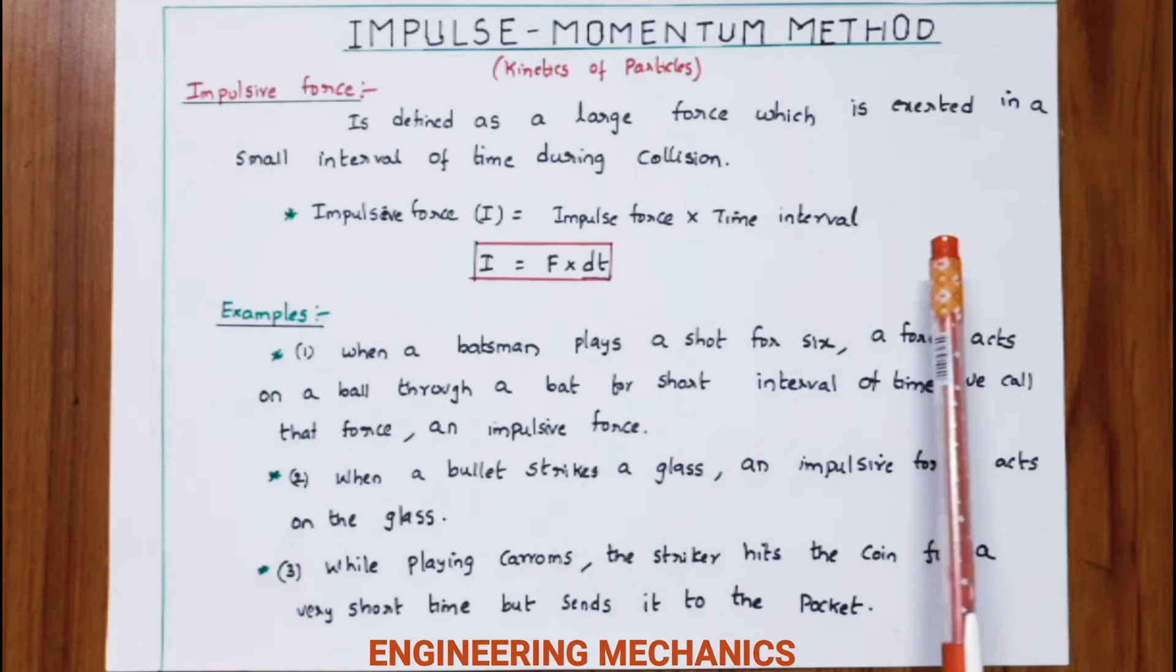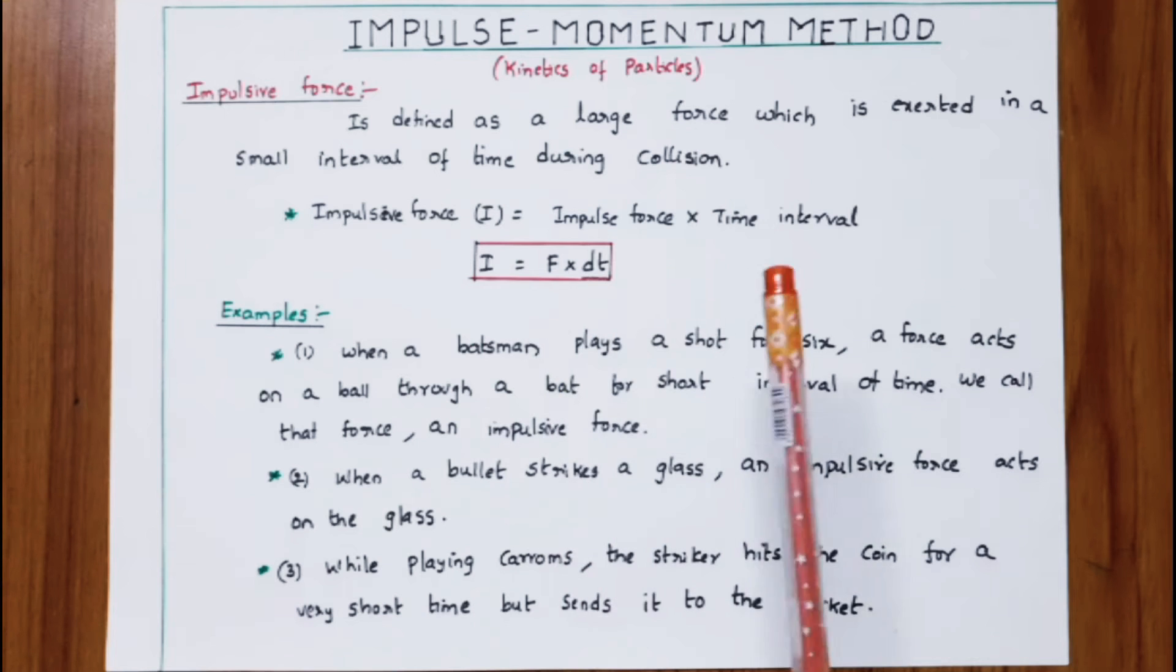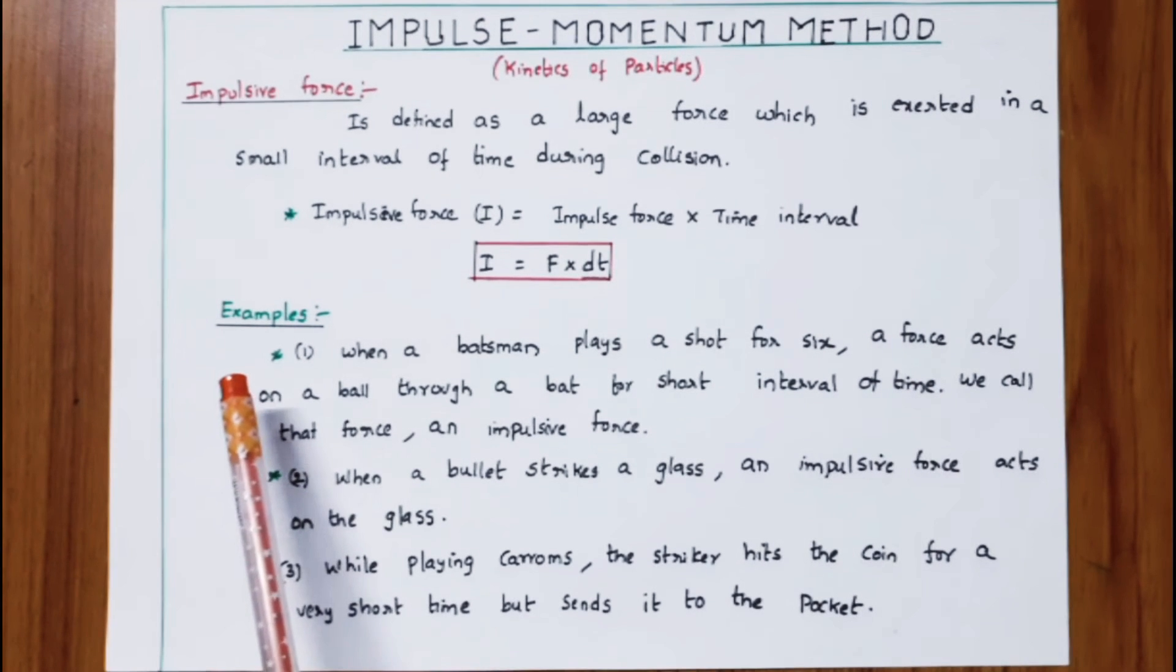Impulsive force I equals impulse force into time interval, so I = F × dt, where F is the impulsive force and dt is the time interval.